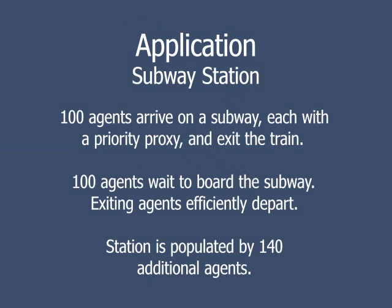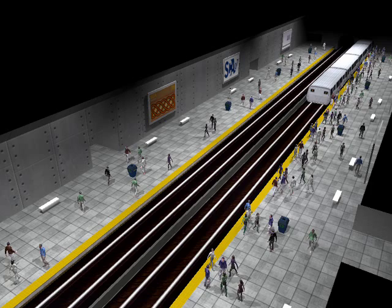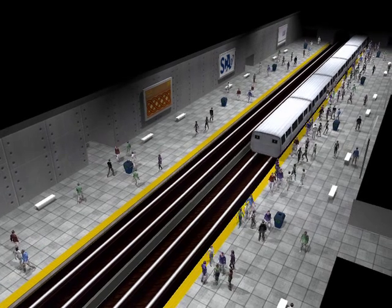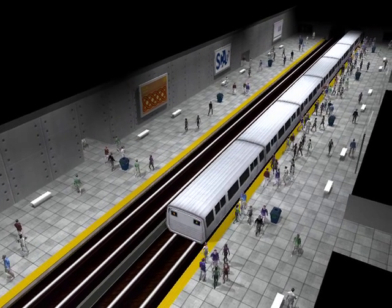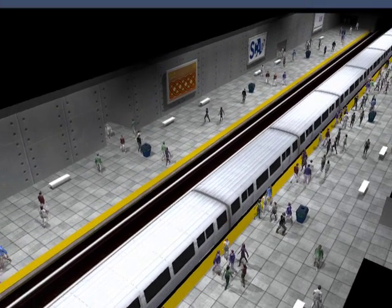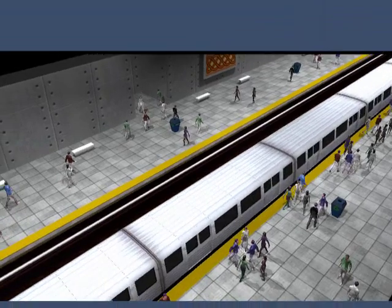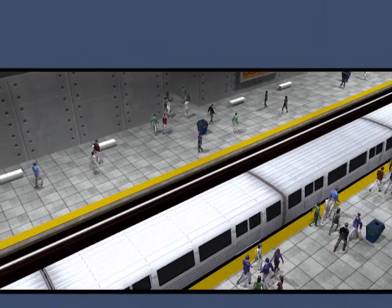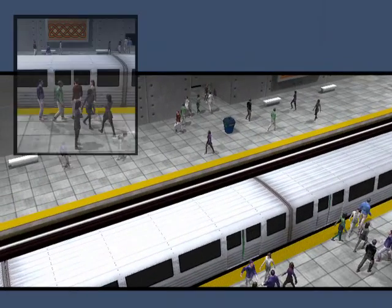One hundred composite agents, each with a priority proxy, arrive on the train. When the doors open, the exiting agents use the priority proxy to efficiently disembark while the boarding agents in turn wait and then board.